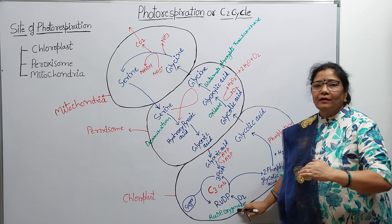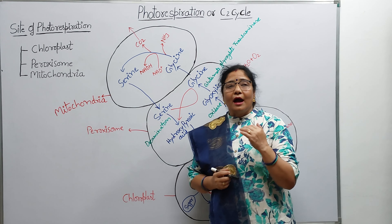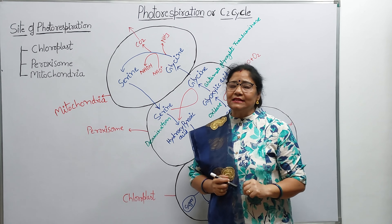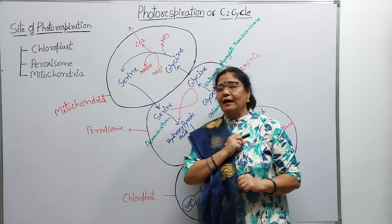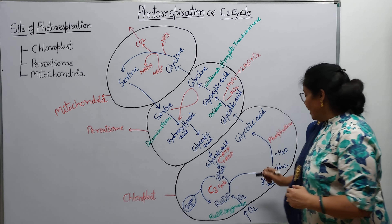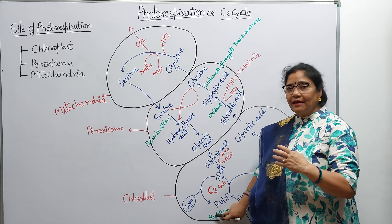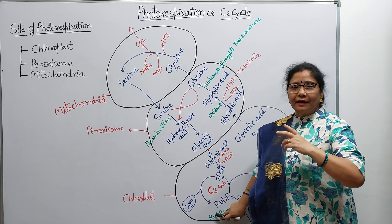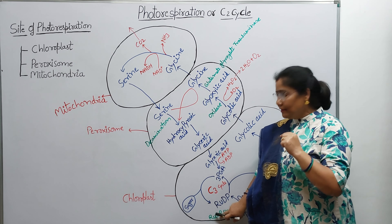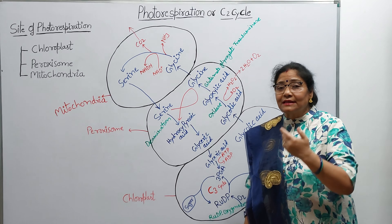Is enzyme ka doosra form hum keh sakte hain RUDP carboxylase enzyme. Yani ki yeh enzyme carbon dioxide se bhi affinity rakhta hai aur saath hi saath oxygen se bhi jodhta hai. RUDP carboxylase enzyme diplomatic hai — jab atmosphere mein carbon dioxide ka concentration zyada hota hai, tab yah carboxylase ki tarah kaam karta hai, yani carbon dioxide ko jodne ka kaam karta hai.